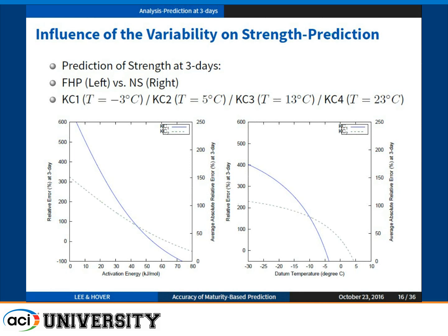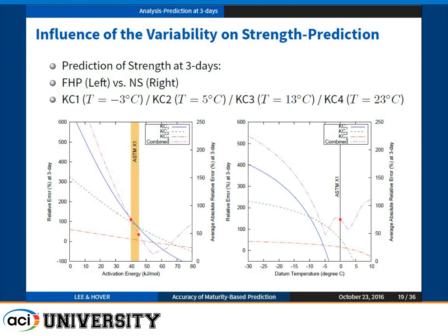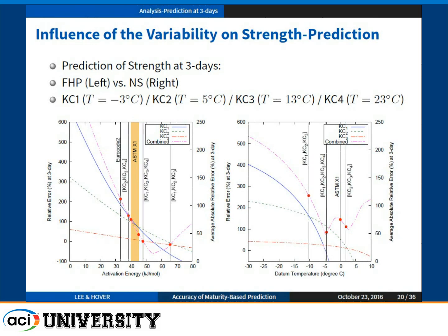For a different temperature data set, the prediction error also similarly varies with respect to activation energy and datum temperature. For the case of 13°C concrete temperature, depending on activation energy or datum temperature changes, the relative error at three days changes significantly. The default value from 1074 gives errors located away from the minimum prediction error range. All different variations of the 1074 method give different values of prediction errors, and those may or may not be different from the minimum error we really want to achieve.